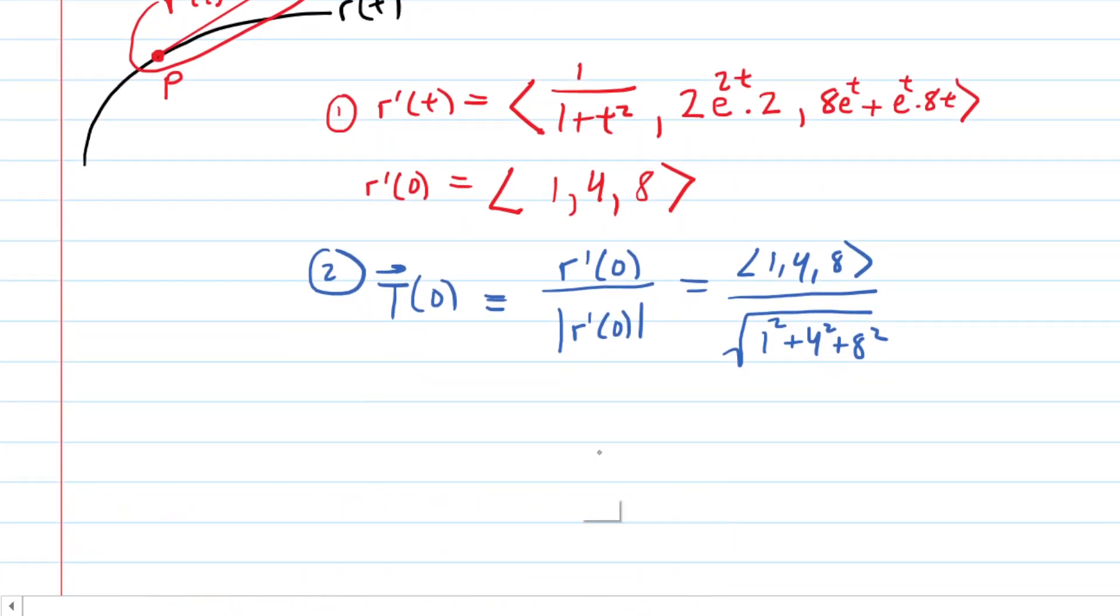Scoot down the page here a little bit. And in the denominator, when you simplify that, you'll get the square root of 81. Now, of course, the square root of 81 is just 9, so we might go ahead and just call this 9.